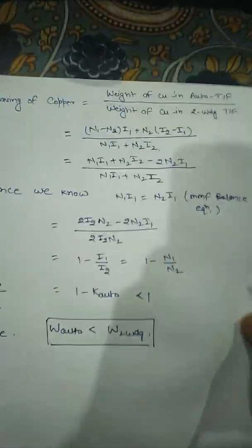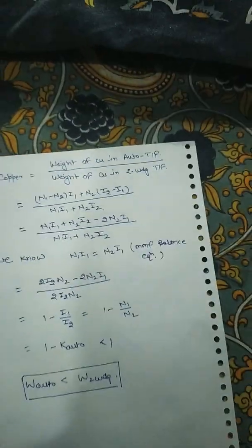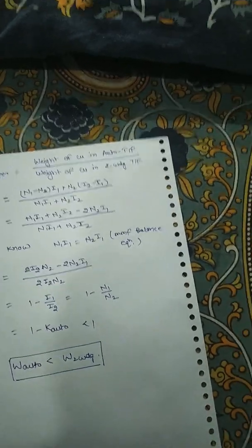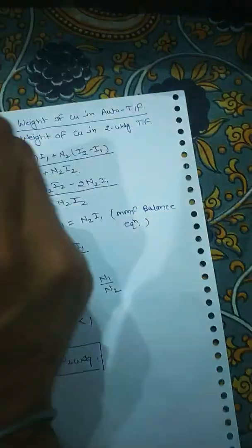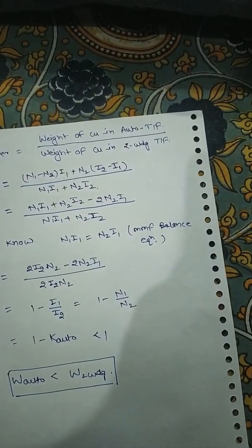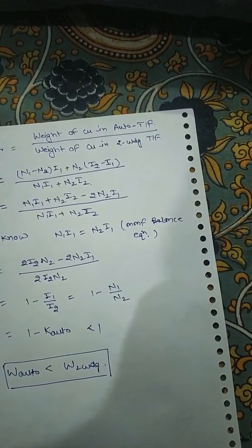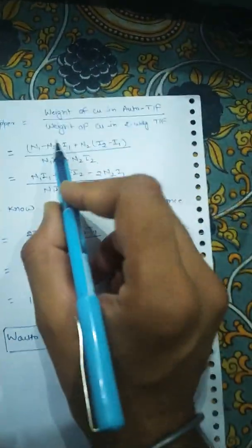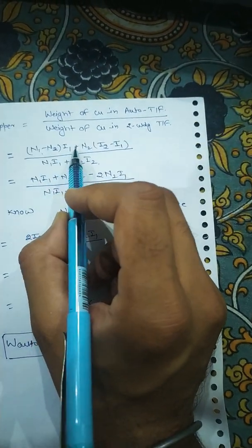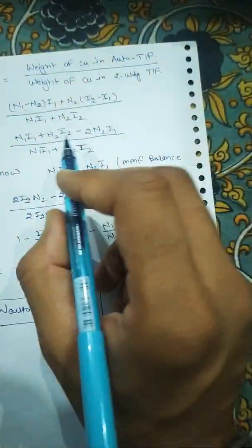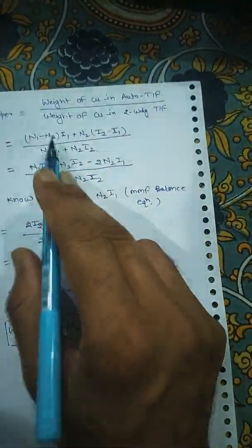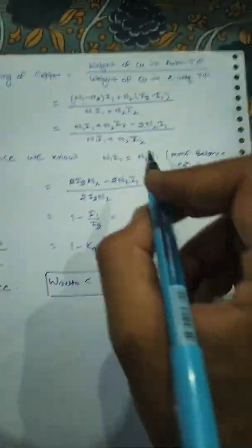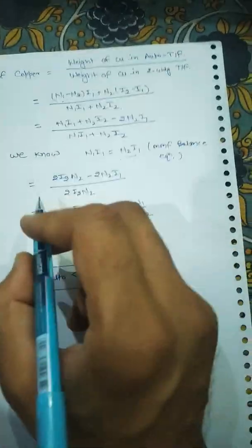Now we will calculate the percentage of copper saved. The copper saving equals the weight of copper in the auto transformer divided by the weight of copper in the two-winding transformer. Substituting the previous formulas and using the MMF balance equation — n1·i1 = n2·i2 — we can simplify the expression.